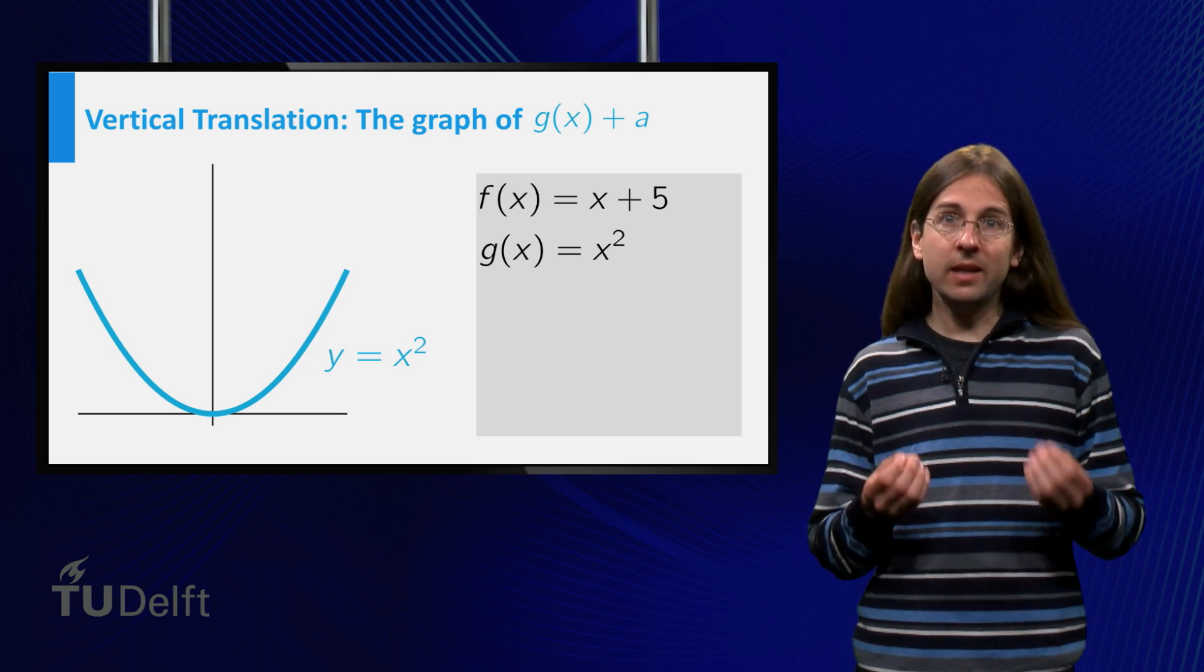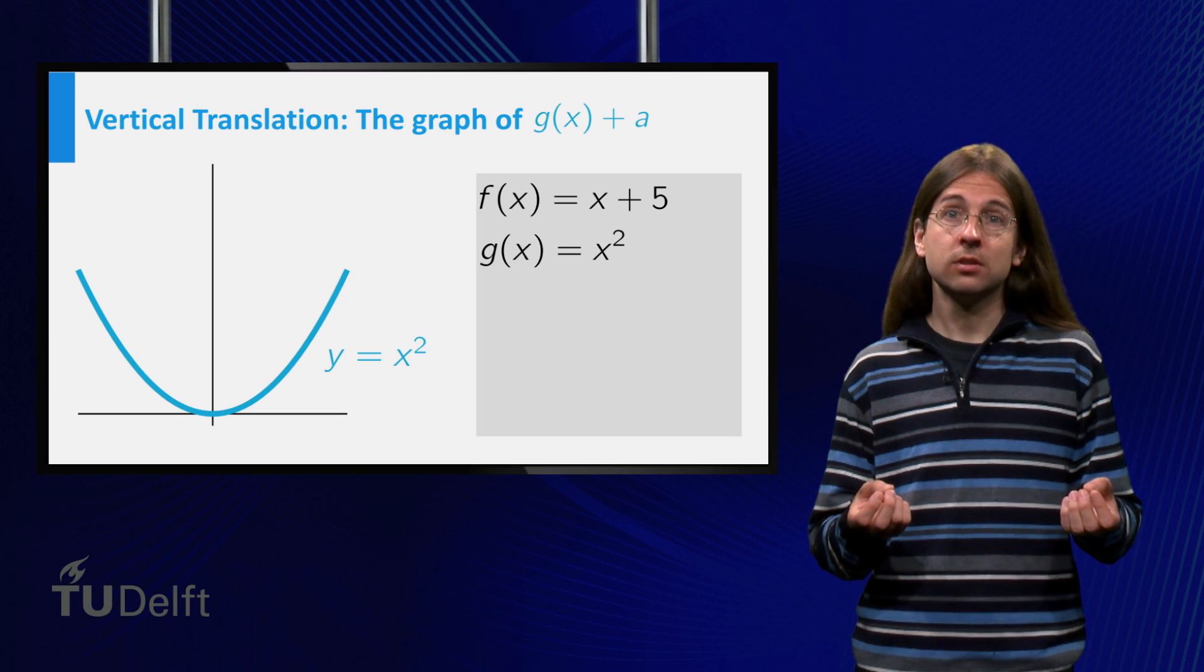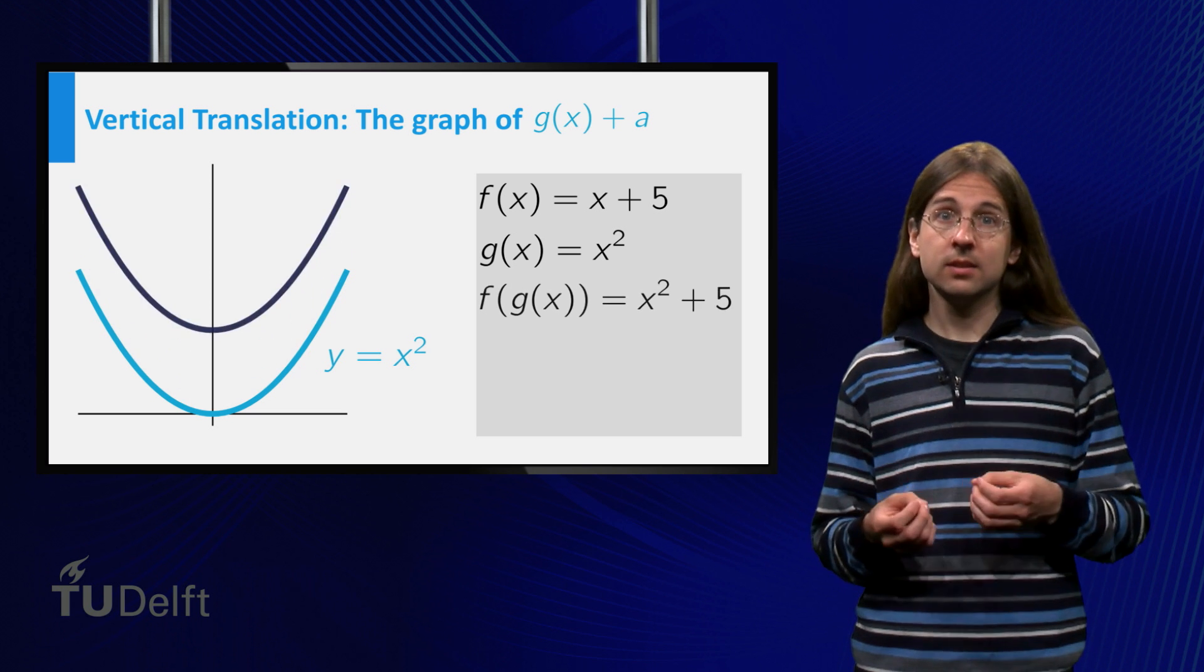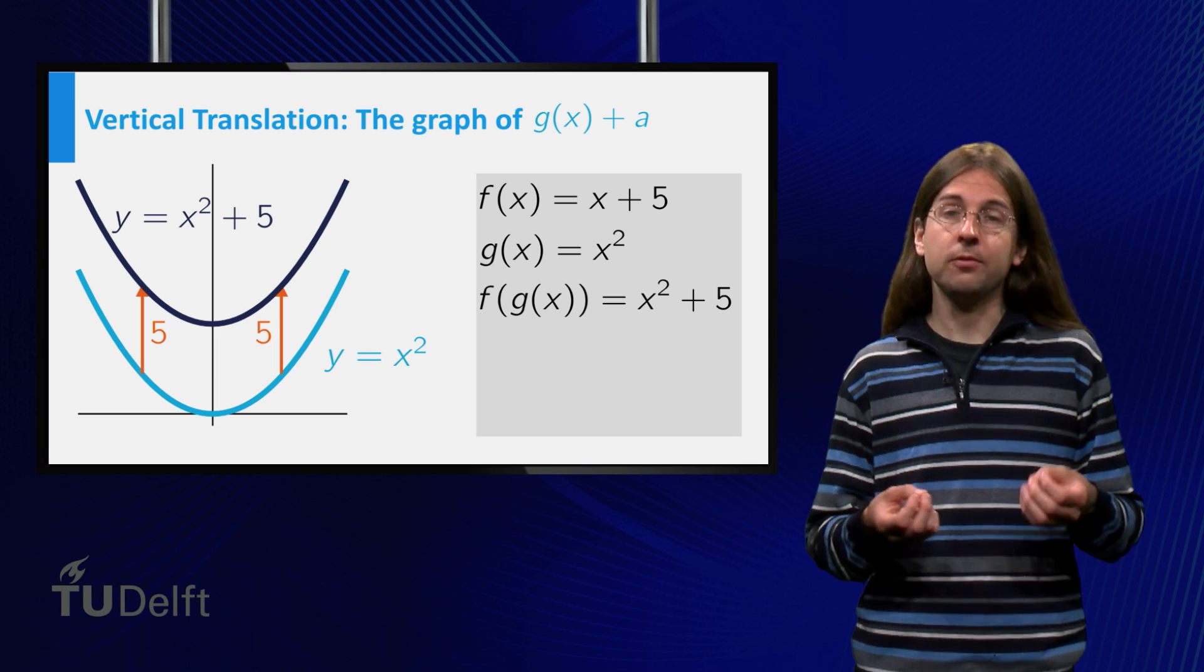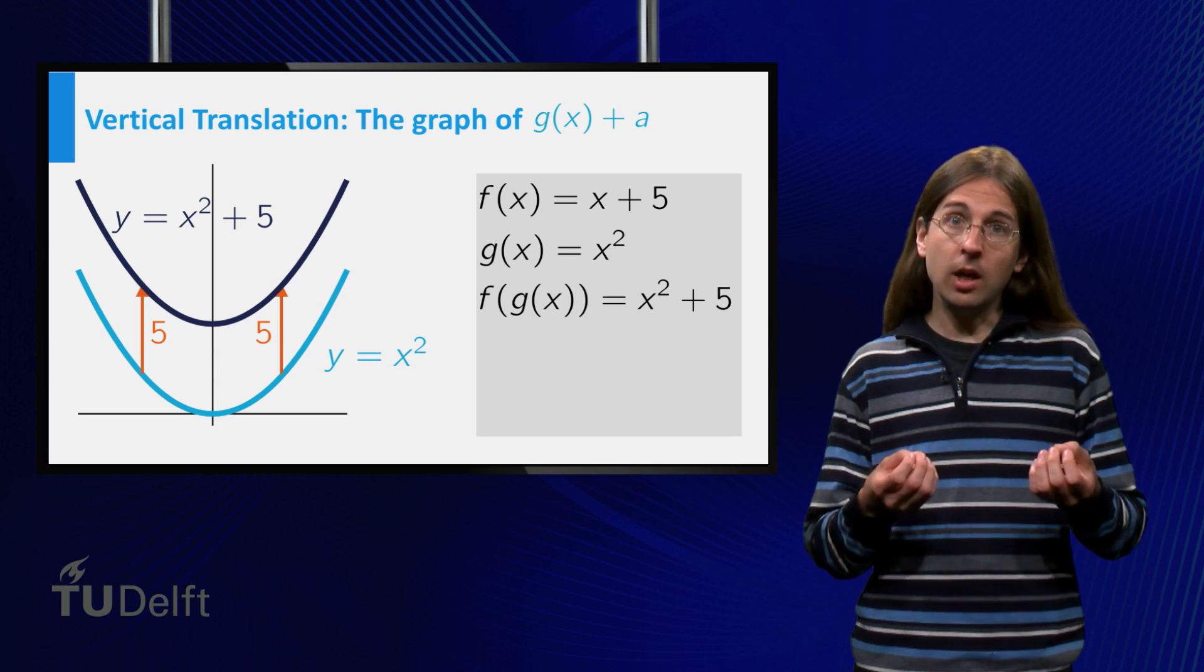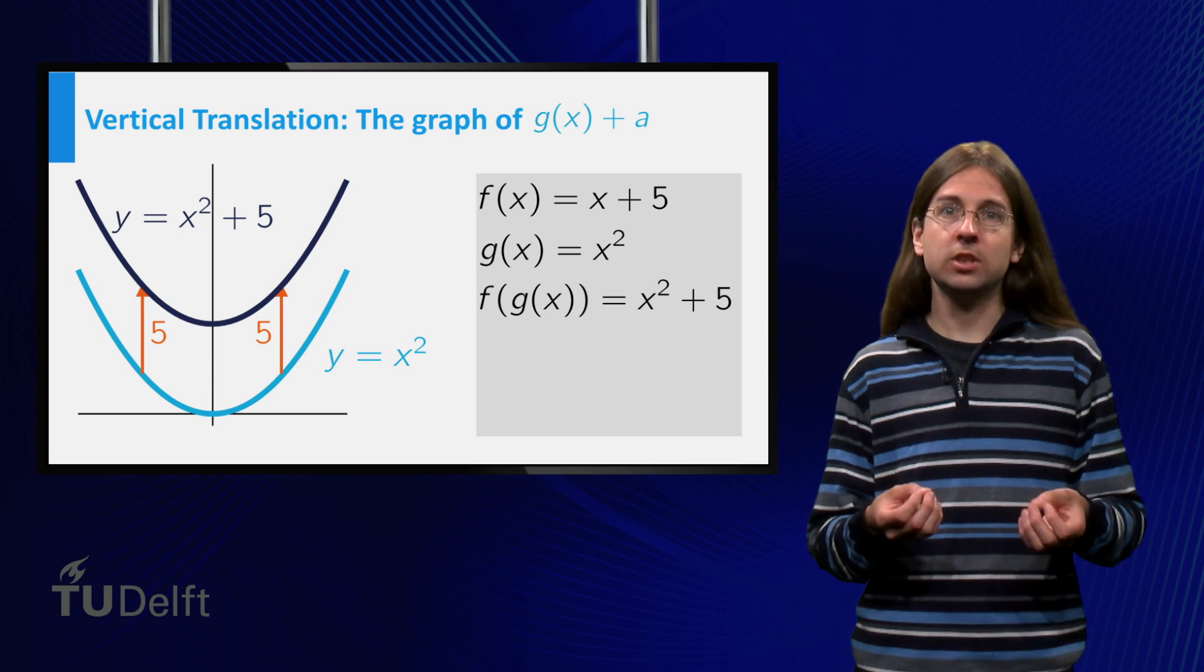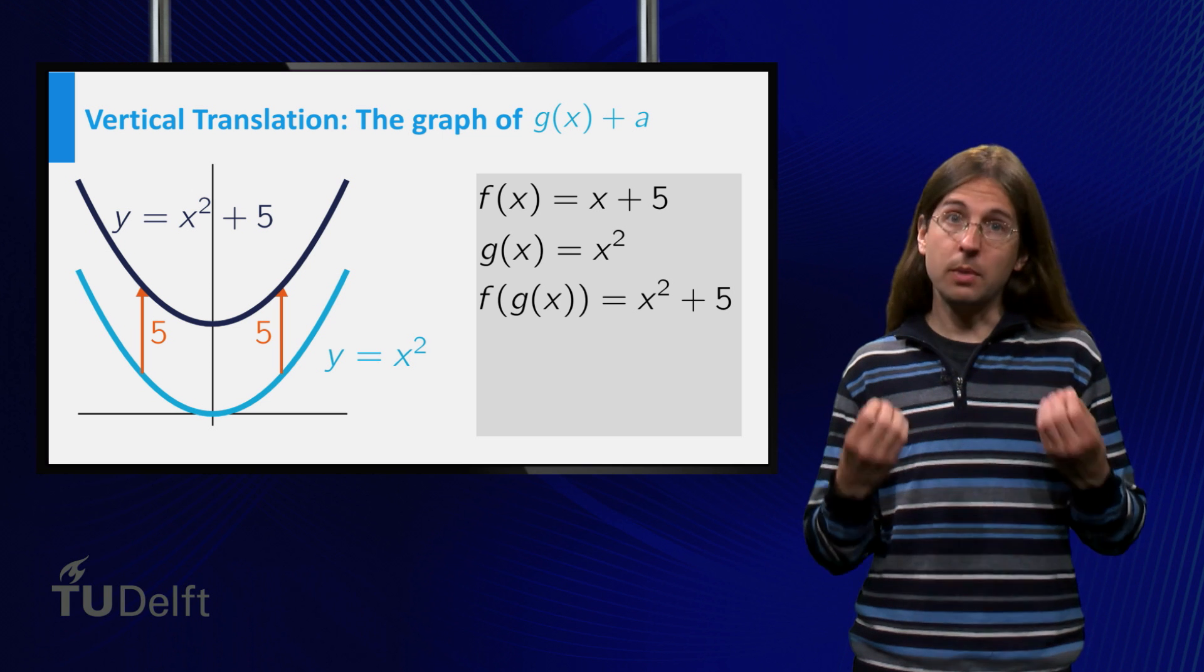Remember that it mattered in which order we composed. If we look at f of g, we obtain the function f of g equals x squared plus 5. The graph of this function is equal to the graph of g shifted upwards by 5.